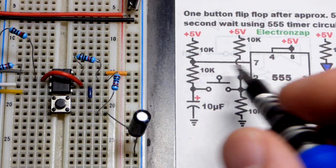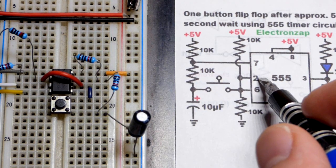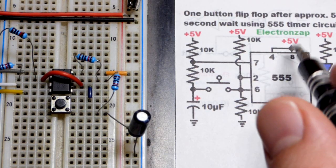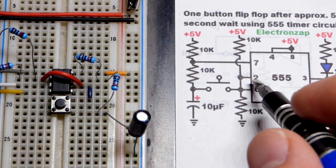So we close this. The capacitor had discharged. Pin 2 sees less than one-third supply voltage. It sets the output high. And you release it quick.